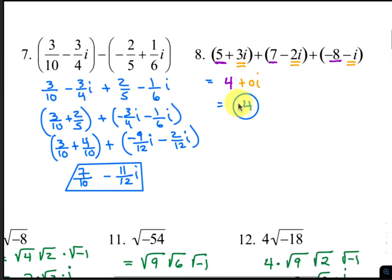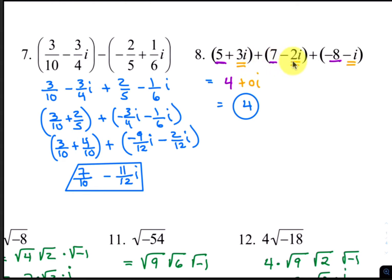For number 8, add the real parts together: 5 plus 7 then minus 8, which adds up to 4. Combining the imaginary parts, that's 3i minus 2i and then minus 1i, which adds up to 0i. So your final answer is just 4.